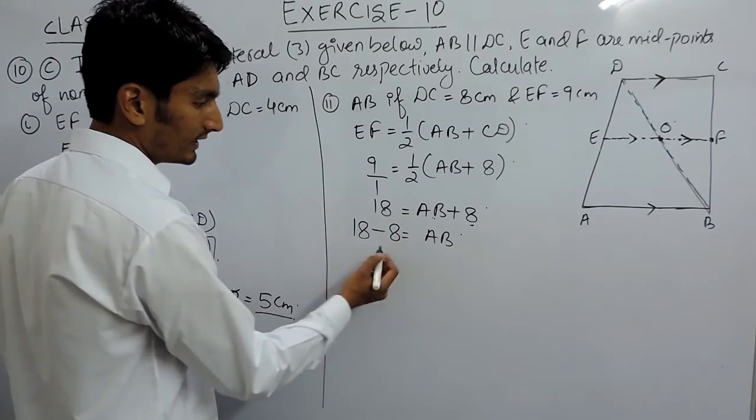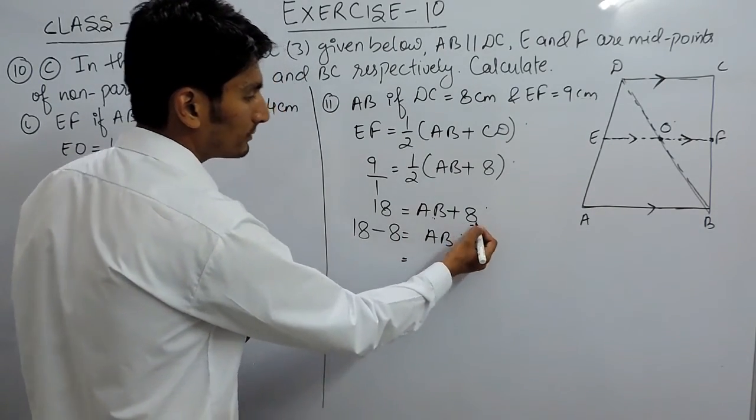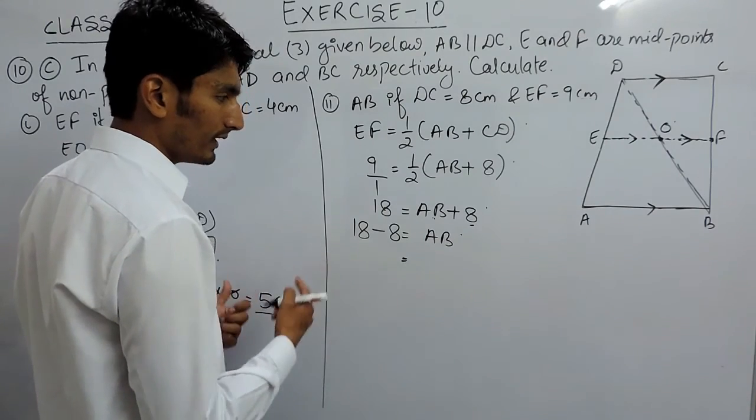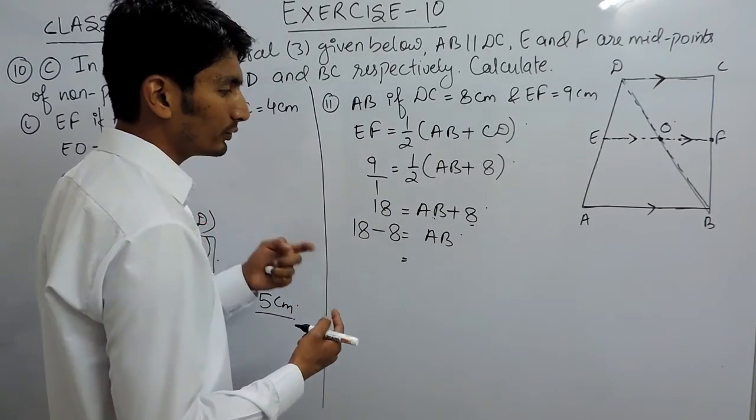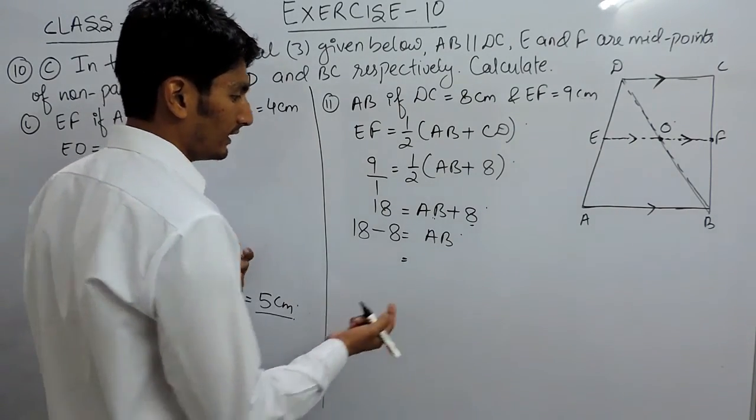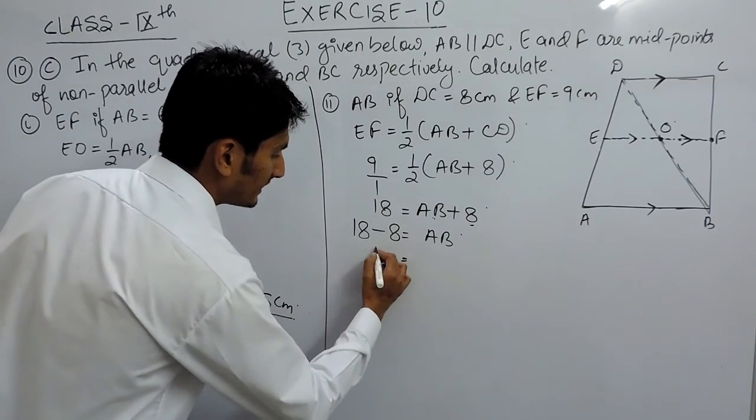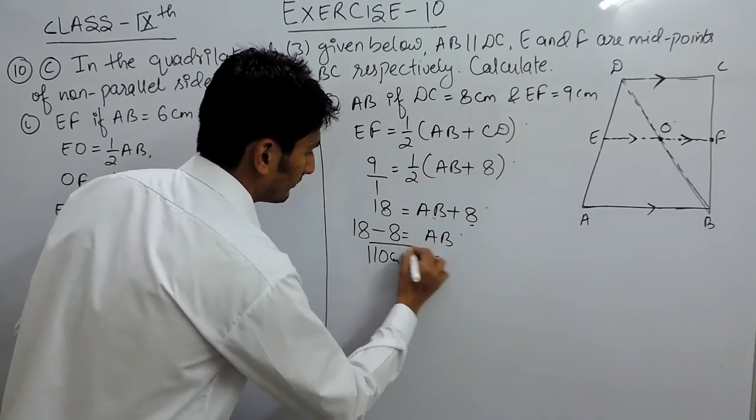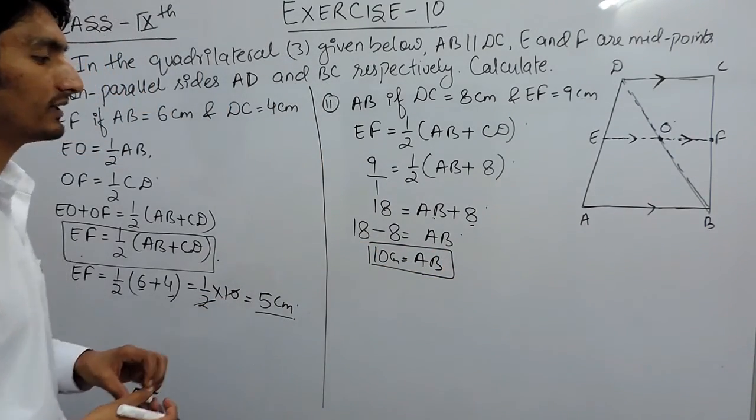I am shifting this constant to this side. One thing is important: plus sign gets changed into negative, plus negative into plus, multiply into divide and divide into multiply. So AB will be 18 minus 8 which is 10 centimeters. The value of AB here should equal 10 centimeters.